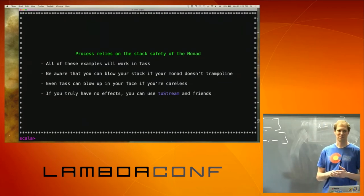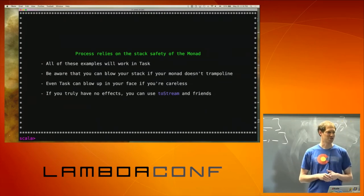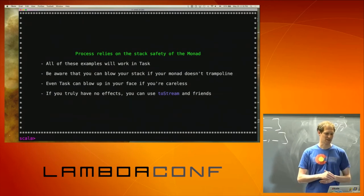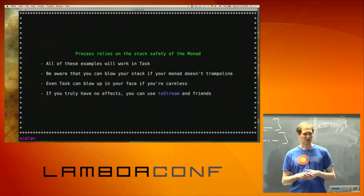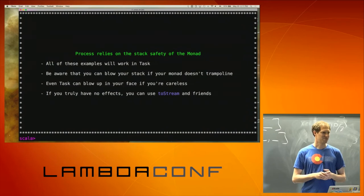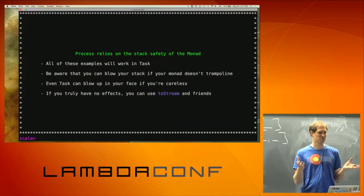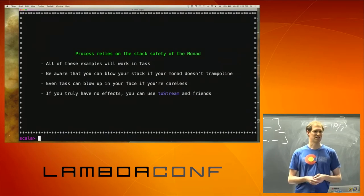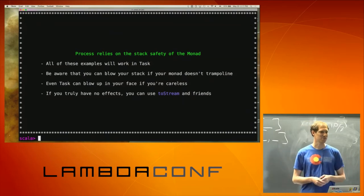Process relies on the stack safety of the monad that you're operating in — there's nothing magic about it, it has to operate based on what the monad can provide. If the monad doesn't trampoline, you can blow your stack. Even if you're using Task, Task is not guaranteed — Task often will run in a different thread depending on what you're doing, but there are cases where it's not, and so it's very easy to blow your stack if you're not careful.